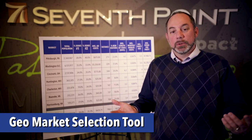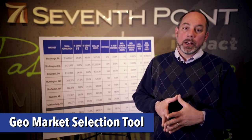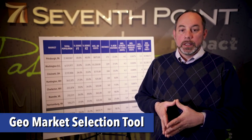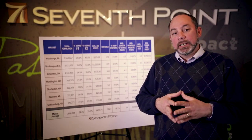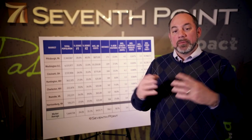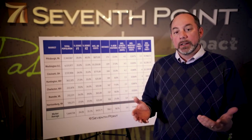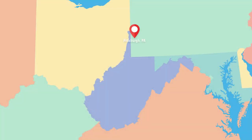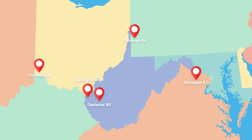The GeoMarket Selection Tool starts with understanding where your customers are coming from. In this example, we use a destination in West Virginia that draws from various cities around the area. We start with markets like Pittsburgh, Washington D.C., Cincinnati, Huntington and Charleston, West Virginia, and markets as far away as Roanoke and Harrisonburg, Virginia. Understanding where your customers are coming from is key to understanding what markets you're going to want to advertise in.